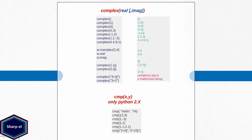The complex function is one of the easiest functions in Python. It takes up to two arguments and returns a complex number. If you call complex without any arguments, it returns a complex number with 0 as the imaginary part. Python uses the letter j to mark the imaginary part. If you pass an integer, the complex function returns a complex number whose real part is the argument and whose imaginary part is 0. If you pass two arguments, the first is the real part and the second is the imaginary part.